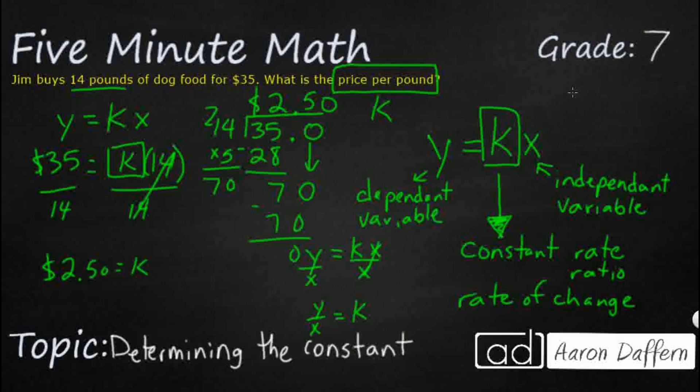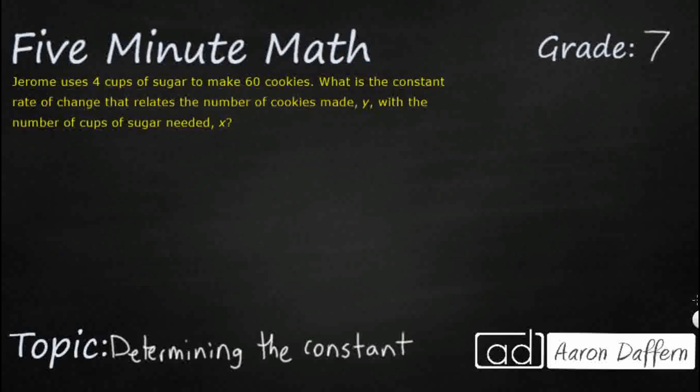Let's see if we can look at one more example. So Jerome is using four cups of sugar to make 60 cookies. We're looking for the constant rate of change. So that's that constant unit rate that we're looking for. And they go ahead and tell us that the number of cookies equals y. So let's say our y equals kx. We need that equation.